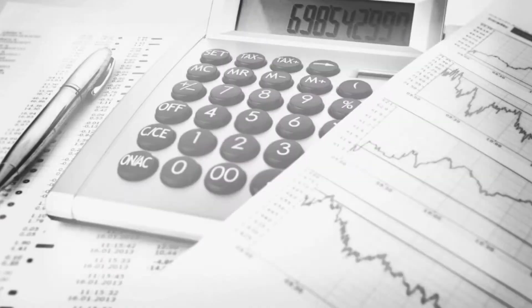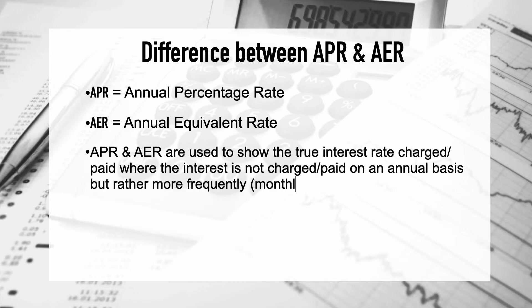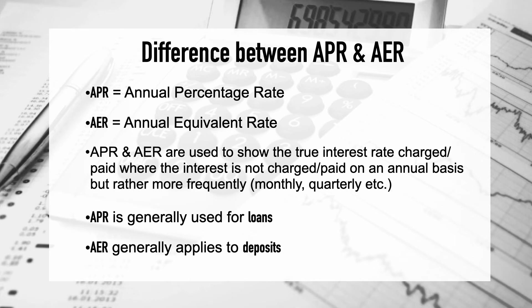Let's discuss the difference between APR and AER. APR stands for annual percentage rate, whereas AER stands for annual equivalent rate. Both are used where interest is not paid on an annual basis but more frequently, because that actually affects the interest you're receiving or paying. As a rule of thumb, APR is generally used for loans, and AER is generally used for deposits — your savings.